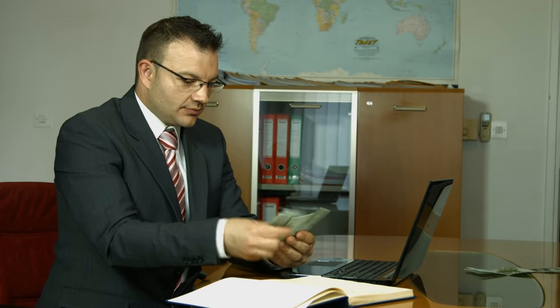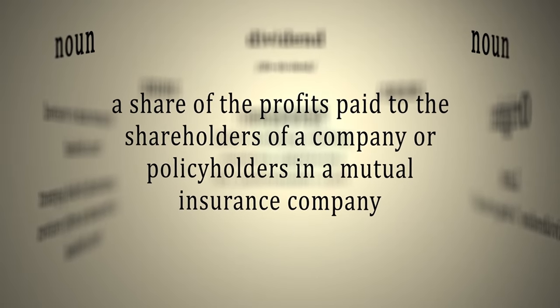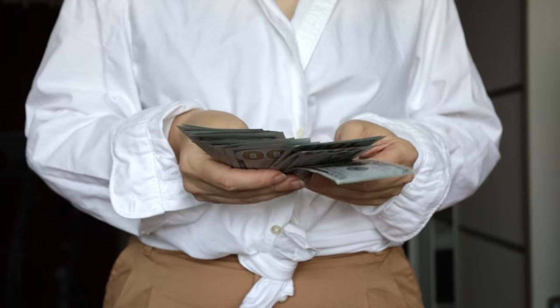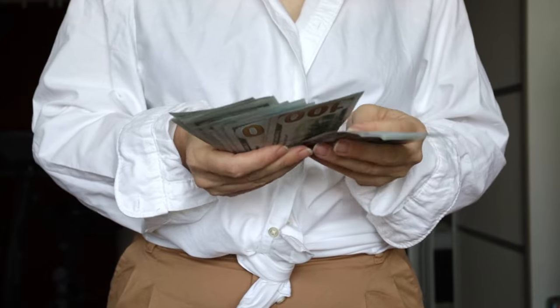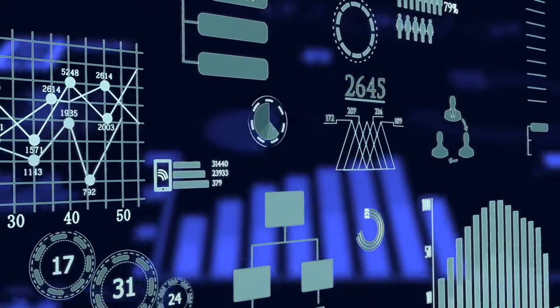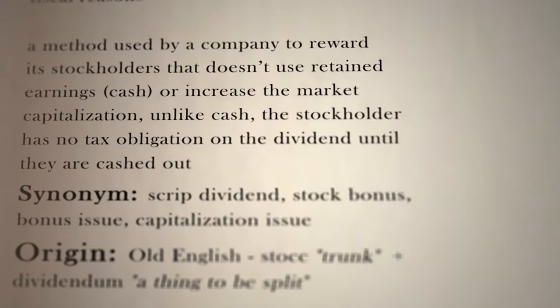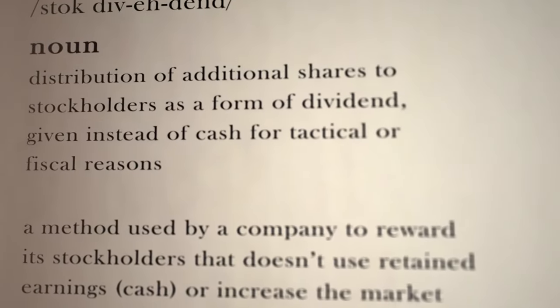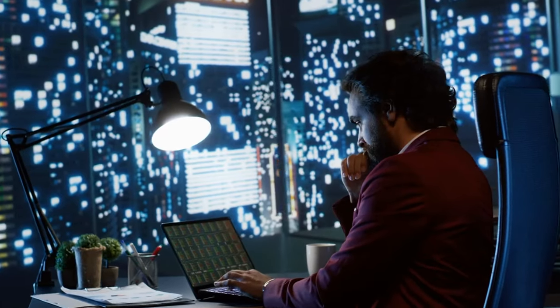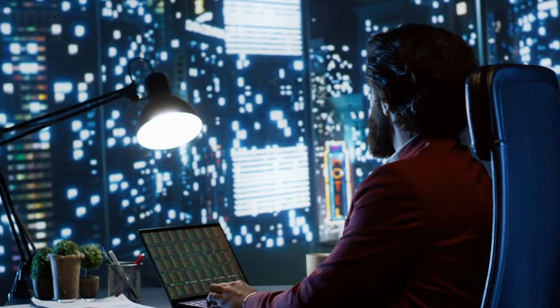A crucial aspect of mastering dividend stocks involves a keen understanding of a company's dividend history. This history provides insight into the company's financial stability and its commitment to rewarding shareholders. Start by looking for companies with a long history of paying and increasing dividends. This suggests a business model that generates sufficient profits and cash flow, allowing the company to share its success with its investors. One group of stocks you might want to consider are the dividend aristocrats — companies that have increased their dividends for at least 25 consecutive years. It's quite an elite club, and membership indicates a serious dedication to rewarding shareholders consistently. A solid dividend history can indicate a company's financial health, its commitment to shareholders, and its potential for future growth.